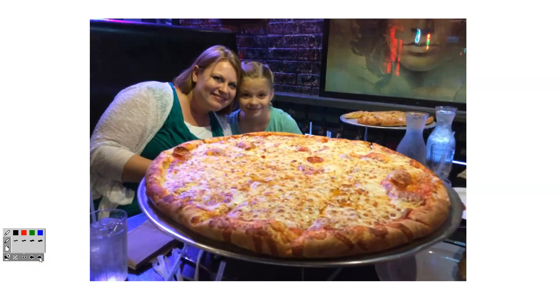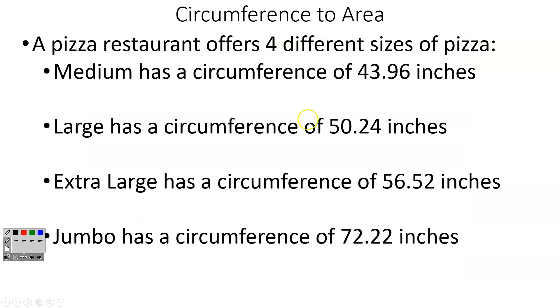So we'll continue to talk about my favorite thing in the world, pizza. So we've got four different sizes of pizza: medium, large, extra large, and jumbo. So let's find out what we do. So a circumference of 43.96.